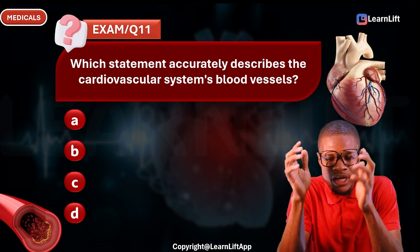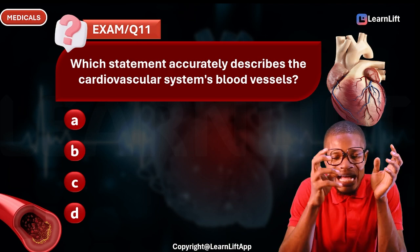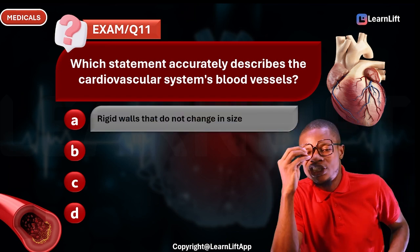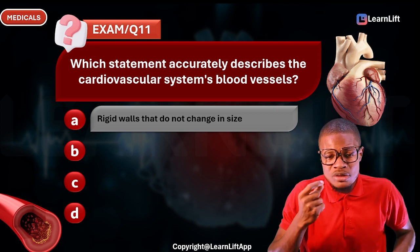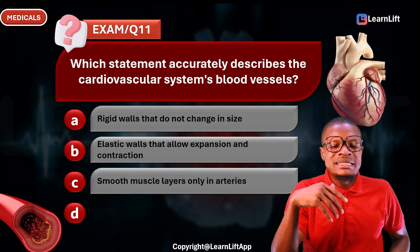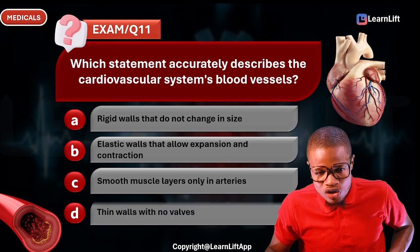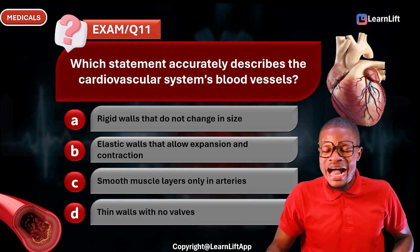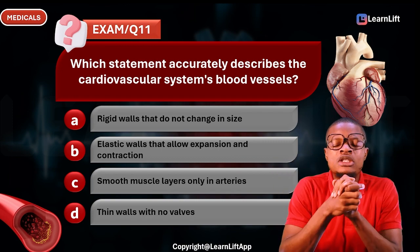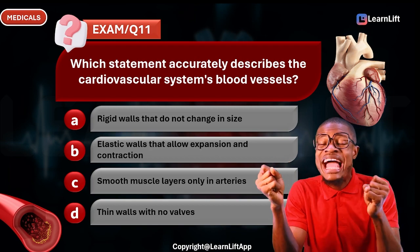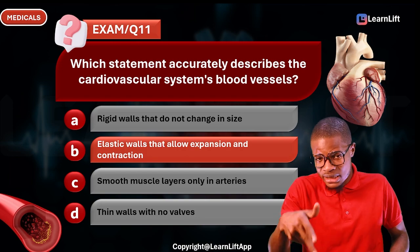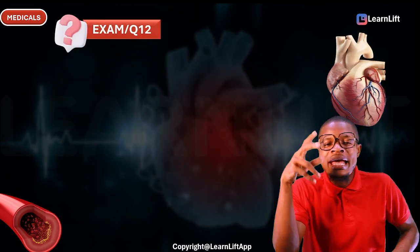Question eleven: Which statement accurately describes cardiovascular system blood vessels? Option A: rigid walls that do not change in size. Option B: elastic walls that allow expansion and contraction. Option C: smooth muscle layer only in arteries. Option D: thin walls with no valves. Blood vessels are elastic and allow for expansion and contraction — Option B is the correct answer.